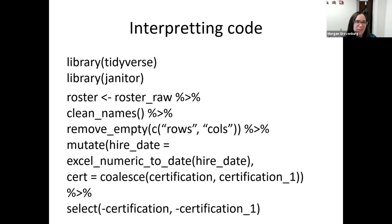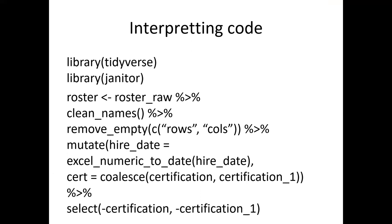For me, I had never seen coalesce before. I saw it in the book, but because 'certification' and 'certification_1' were so similar in name, I assumed it was combining them in some way. Someone explains: the function finds the first non-missing value given a vector. So it's used to check if there's any missing value in the vector — it basically finds the first non-missing value in 'certification' and replaces those using 'certification_1'.